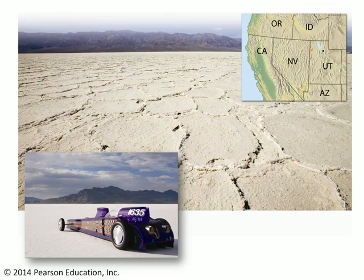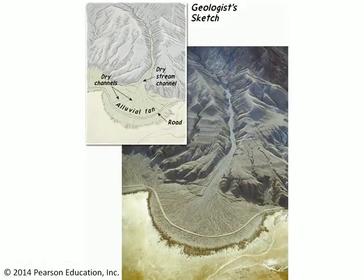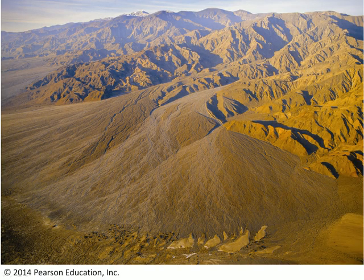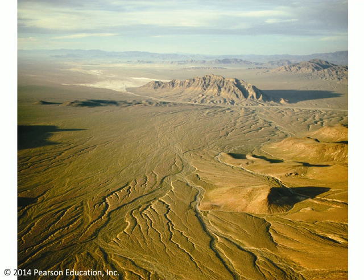Let's take a look at some examples here. Here's a salt flat — this is the Bonneville Salt Flats in Utah. Here's an example of an alluvial fan leaving a range and entering a basin. Here's an example of several alluvial fans that have coalesced to form a bajada. And here's an example of an inselberg or two — there's a prominent inselberg right here, and there's even a little one right here.